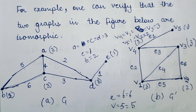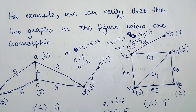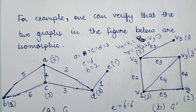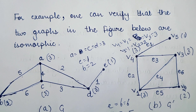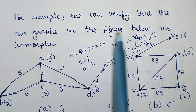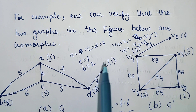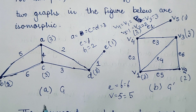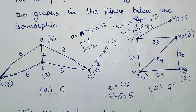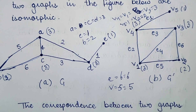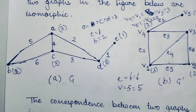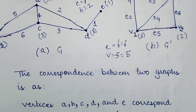Now let's see this with the help of an example. Consider this particular example — we can verify that these two graphs drawn below are isomorphic. There are two graphs: the graph in figure A and the graph in figure B. Let's prove how these graphs are isomorphic.